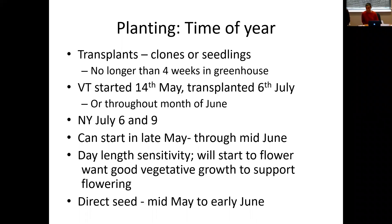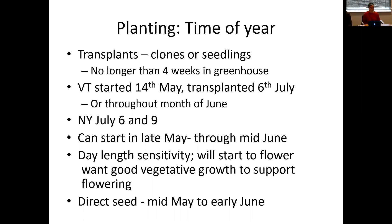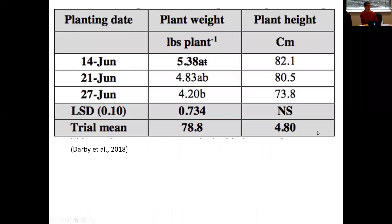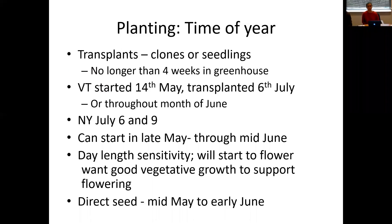Hemp is day-length sensitive, so it will start to flower as the days start to shorten. You want to make sure it's out in that field long enough to get good vegetative growth to support flowering structures and support good flowers. Direct seeding can be done a little bit earlier — a mid-May to early June window — since those plants need to get to the point where a transplant would be.